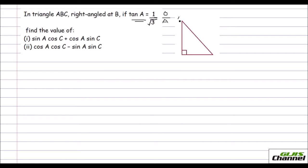Let me first name the triangle. This is A, B is at the right angle, and C. The angle is at A — tan A. So which is your opposite side? This one is your opposite side, this one is your adjacent side, and this one is your hypotenuse side. The values given are: opposite is 1 and the adjacent side is root 3.